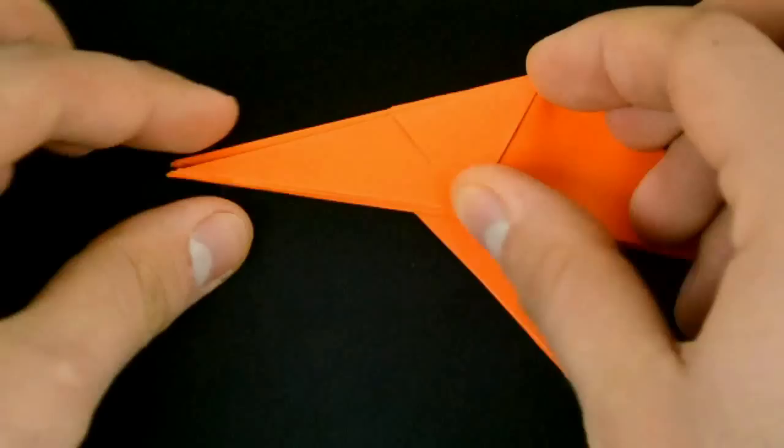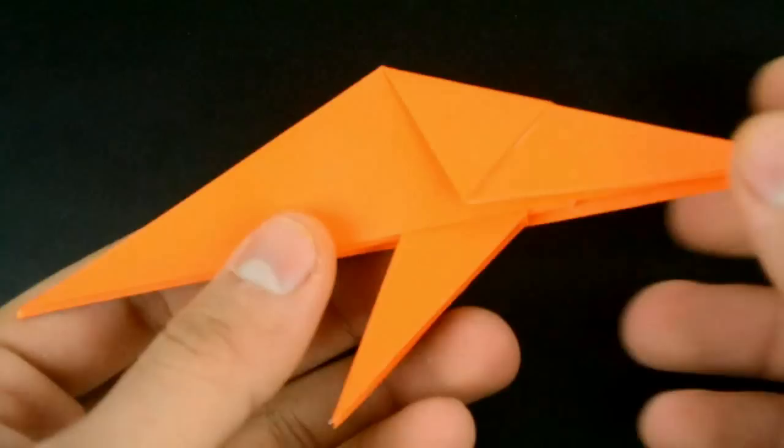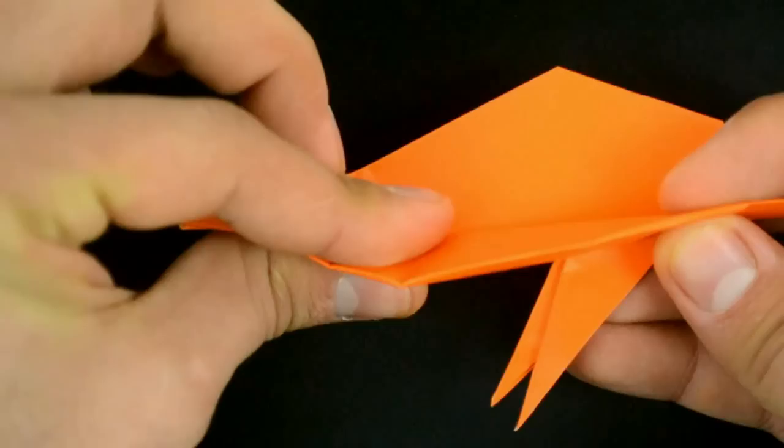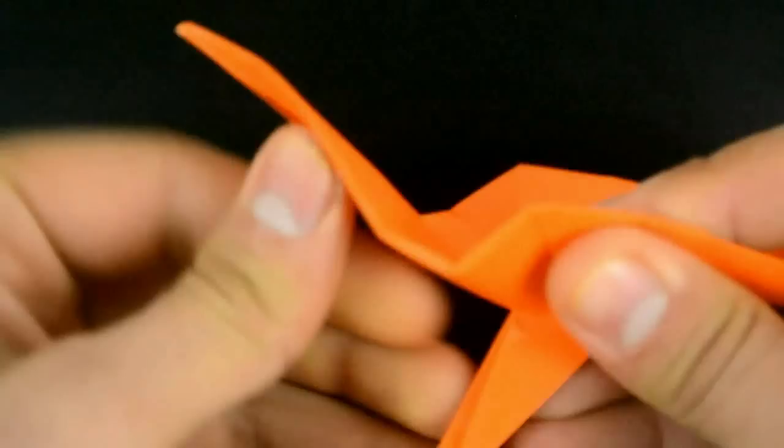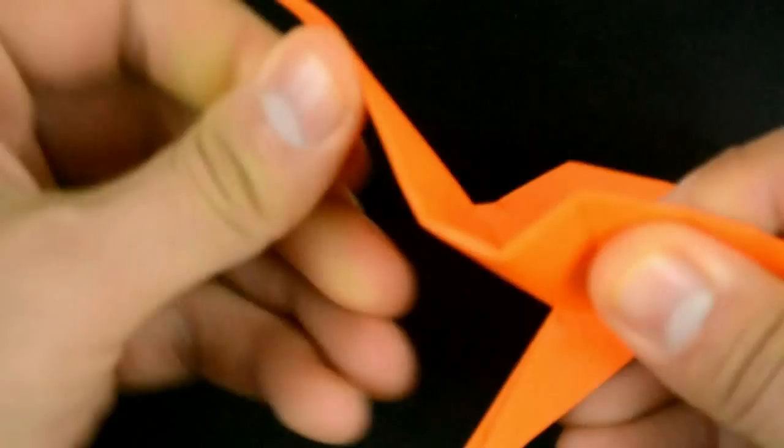Now we need to reverse the larger flap. So in this position, just open a little bit here and bring the paper up, until this corner on the back of the pigeon. Just like that.